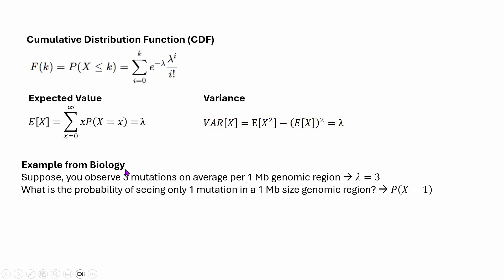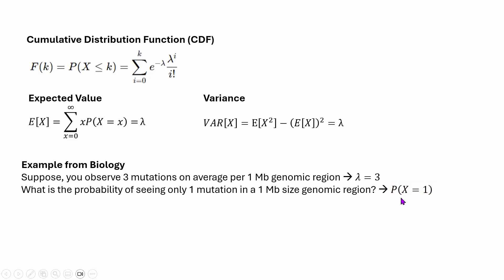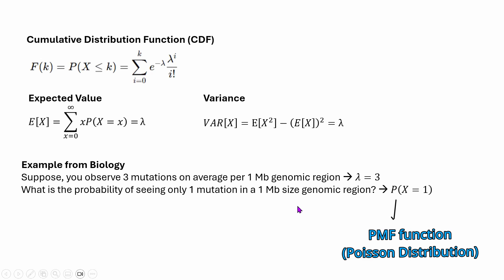Let's see an example from biology. Suppose you observe three mutations on average per one megabase-size genomic region — that is three mutations per one megabase, so the rate parameter lambda equals 3. What is the probability of seeing only one mutation in a one megabase-size genomic region? You need to find the probability of x equal to 1. You just plug x into the PMF function of the Poisson distribution, and that gives you the probability.